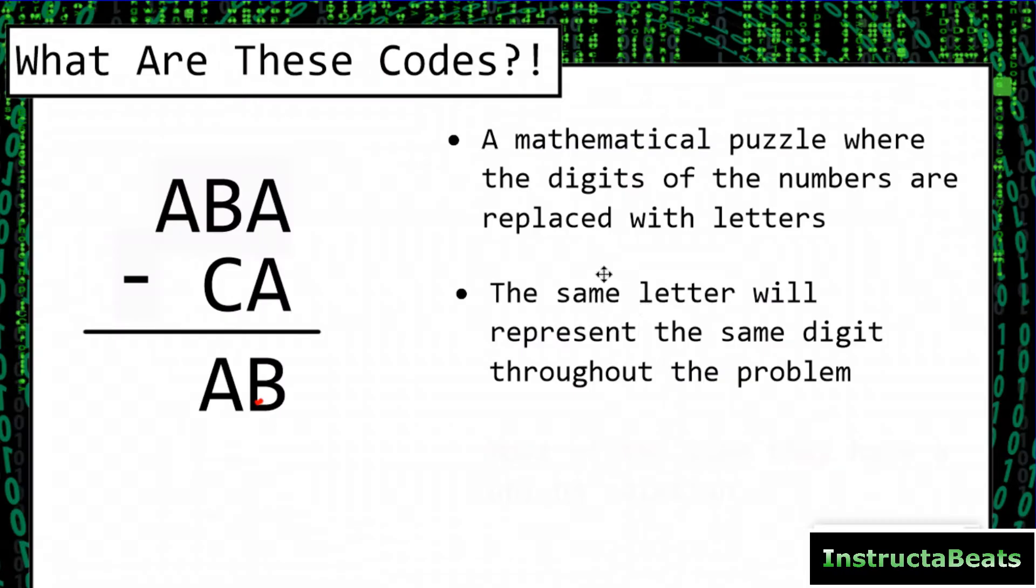The important thing is that the same letter will represent the same digit throughout the entire problem. So for instance, if you solve this and you think that A would be three, that means every time you see an A in the subtraction problem, it's going to be a three. If you think B was one, every time you see a B, you could replace it with a one. And that's something that's really important that a lot of people don't understand when they look at these problems.